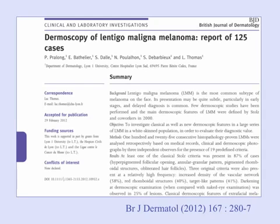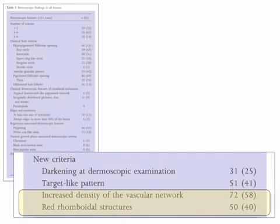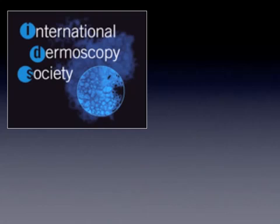These new signs have been described in a recently published paper. As you can see, these new signs are present in almost 60 percent of cases for the density of the vascular network, and 40 percent for the red rhomboidal structures. What is important is to see that the vessels are different inside and outside the lesion — often enlarged, often with increased density, but moreover different inside. Thank you very much for your attention.